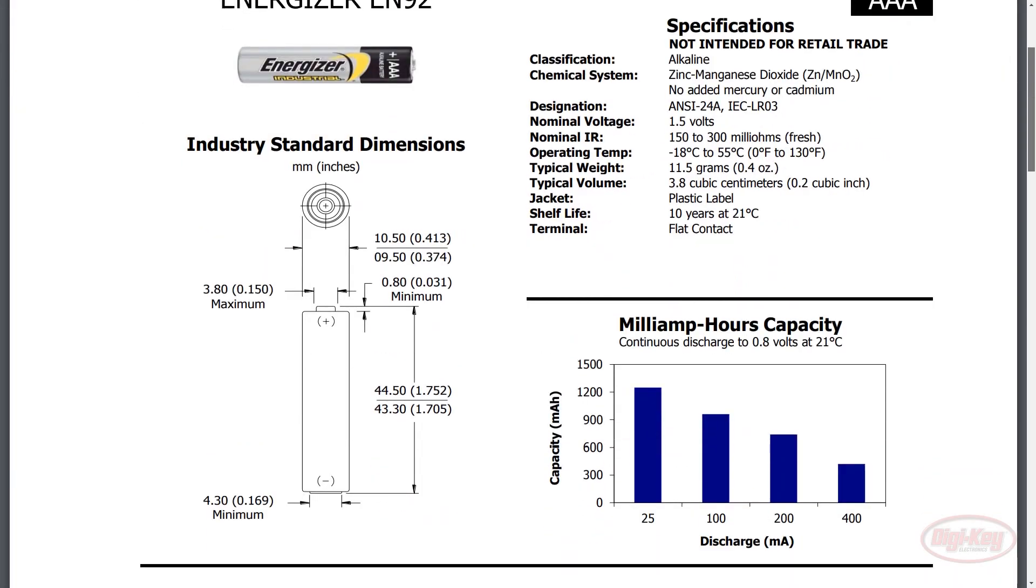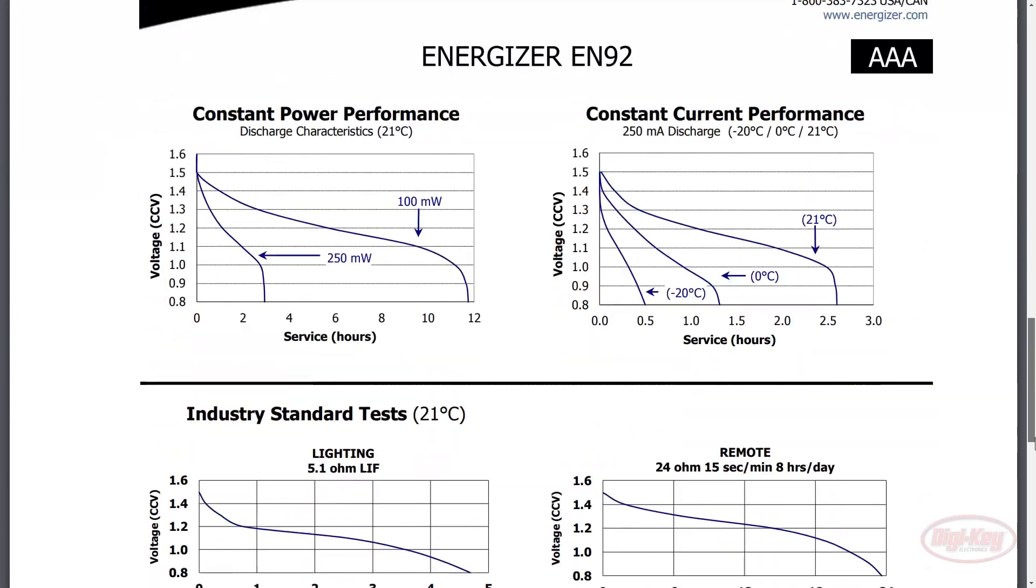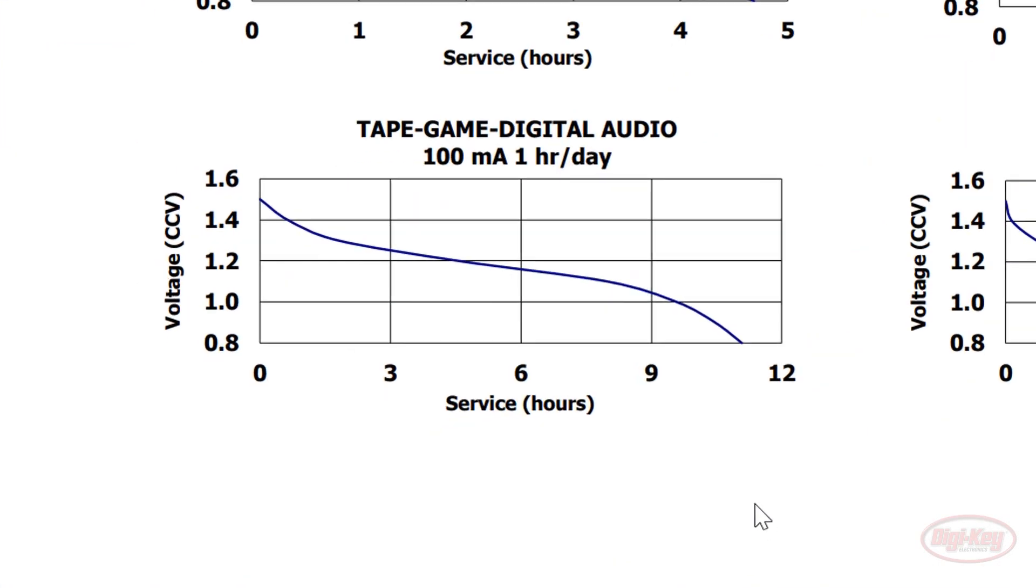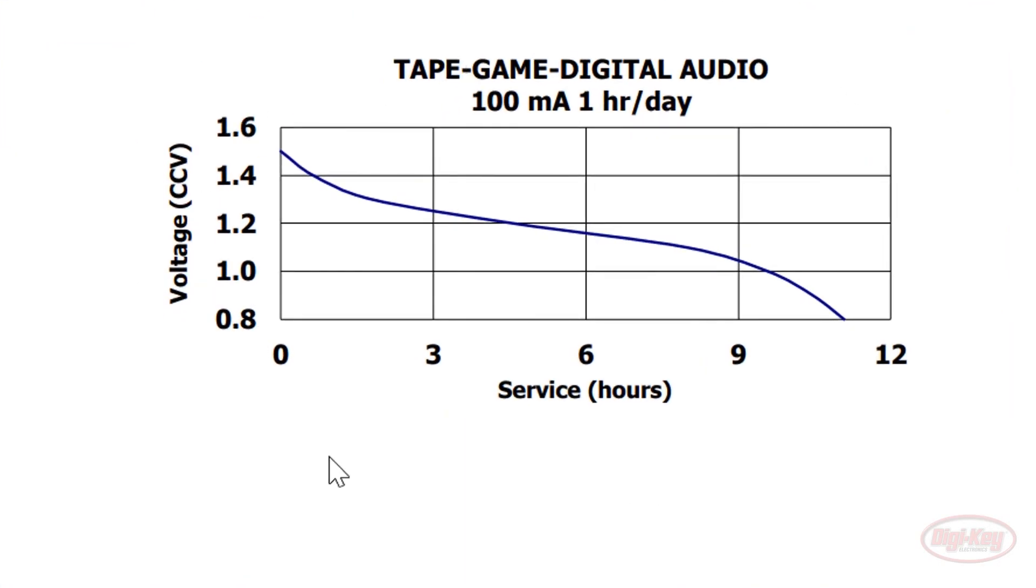If you look at any good data sheet for a battery, you should find something that looks like this. A discharge curve, or discharge characteristic curve, that shows how the battery behaves under some load. I don't know what a tape game digital audio is, but I presume it's some type of handheld device that's ideally used an hour each day. Regardless, we can see that as the batteries drain, they slowly lose their voltage.